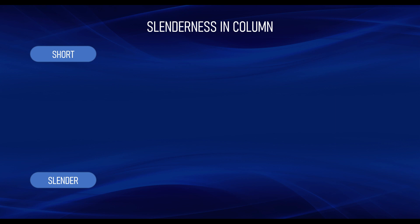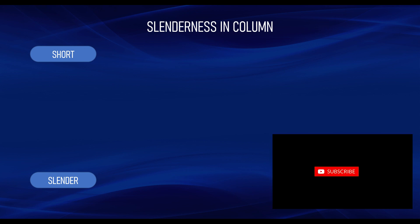According to the Eurocode, you can differentiate short and slender columns using what we call the slenderness limit. If you are familiar with the British Standard (BS code), you will see there is a recommended limit for a braced column and another limit for an unbraced column. You check your slenderness ratio and compare it with the limit given by the code. The same principle applies to the Eurocode, but there are additional considerations to determine whether a column is short or slender.